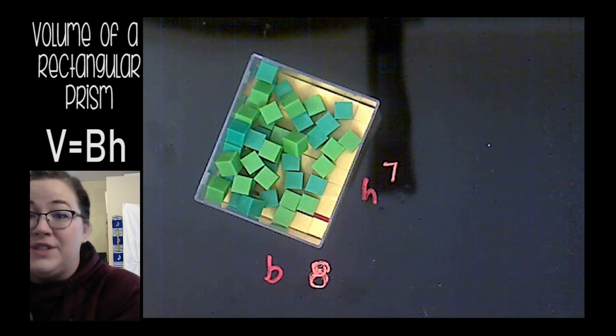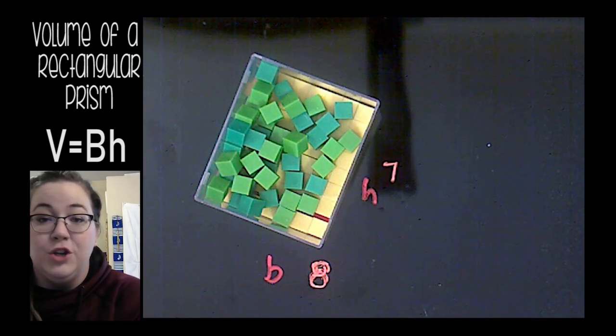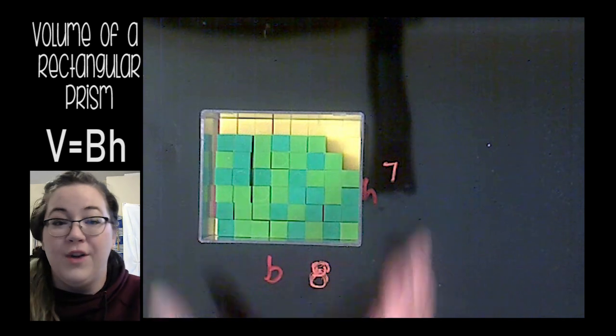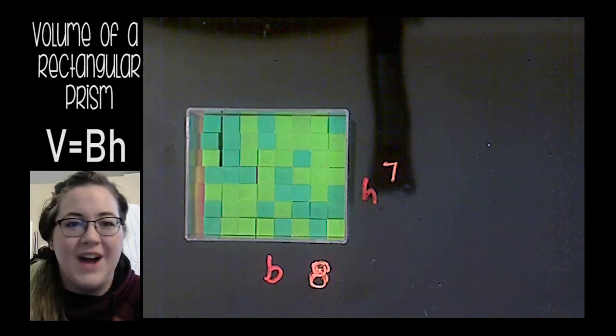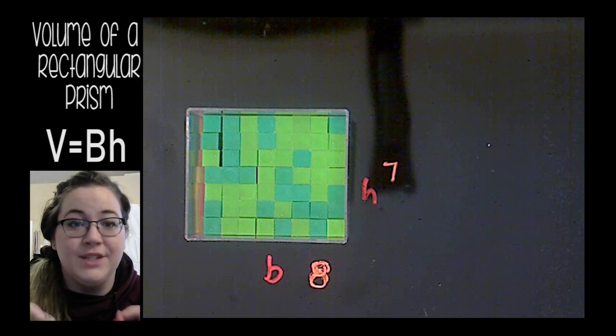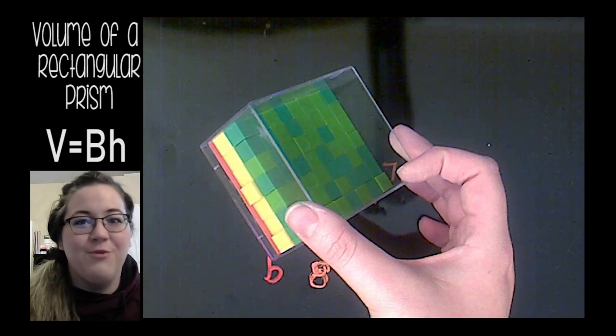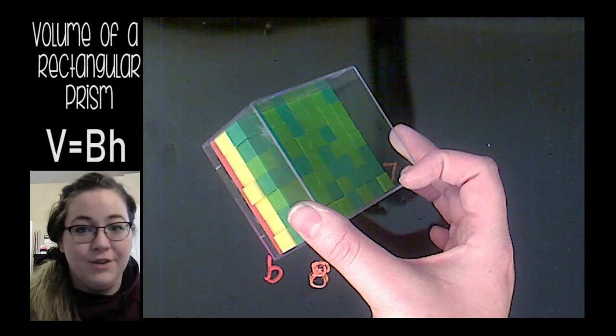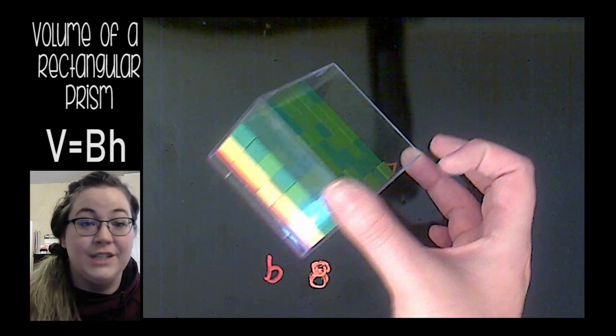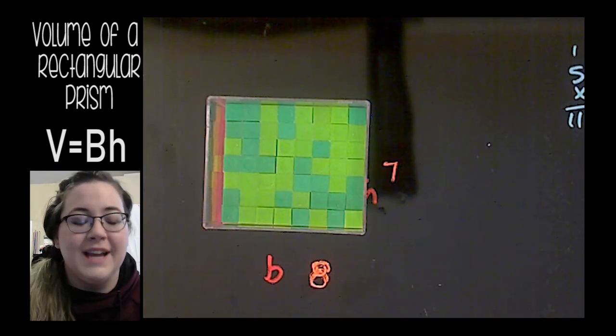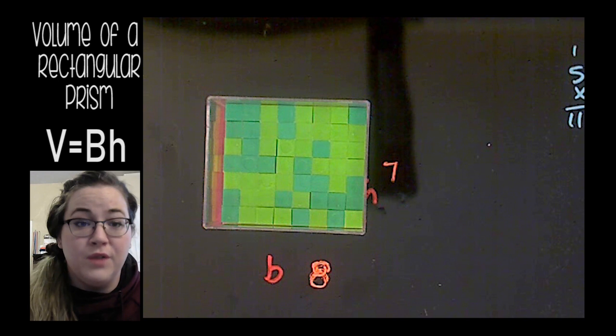I should be able to add 56 green cubes for my next layer. Okay, almost there! So I just added a layer of 56 green cubes. Now I have one layer of 56 yellow cubes and another layer of 56 green cubes. 56 times 2 is 112 cubes.